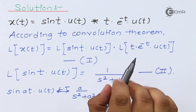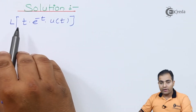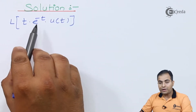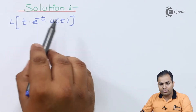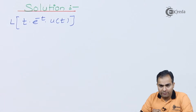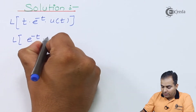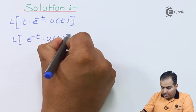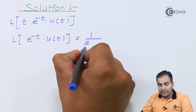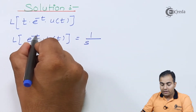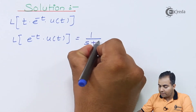Now find the Laplace transform of t·e^(-t)·u(t). Using the frequency shifting property, the Laplace transform of e^(-t)·u(t) is obtained by taking the Laplace transform of u(t), which is 1/s, and shifting s by +1, giving 1/(s+1). This is equation number 2.